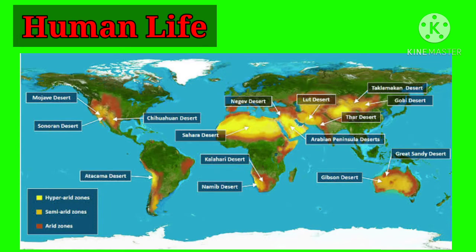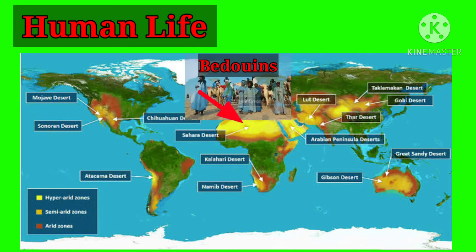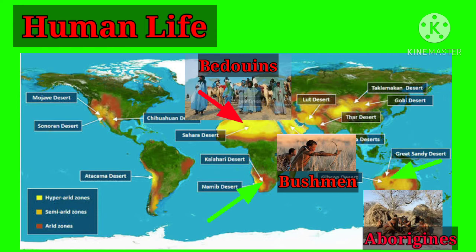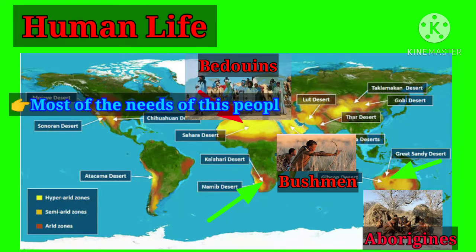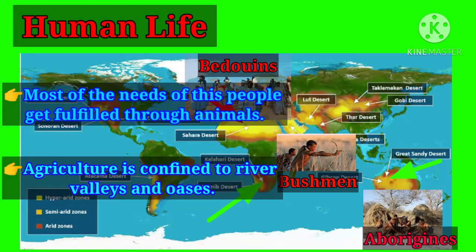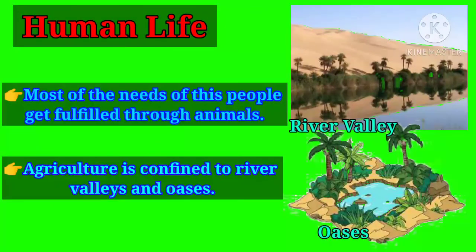Human life: People staying in hot desert regions are named differently across the world. In the Sahara Desert, people are known as Bedouins; in the Kalahari Desert, they are known as Bushmen; and in Australian deserts, they are known as Aborigines. Most of their needs are fulfilled through animals. Agriculture is confined to river valleys and oases, which are freshwater sources found in the fertile regions of hot deserts.